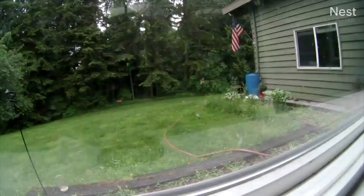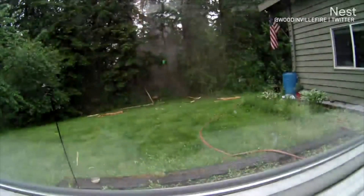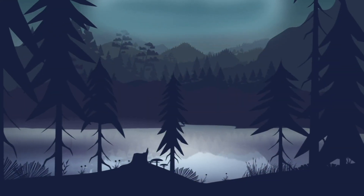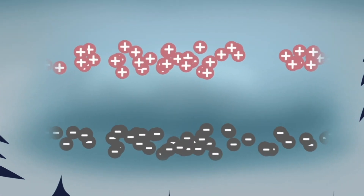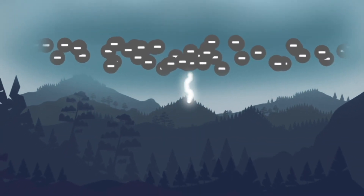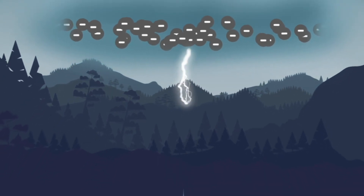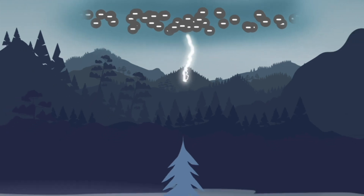Things can get dangerous when lightning strikes the ground. How does that happen? It gets very complicated. First, charges separate in the clouds. Then a channel of negative charge comes out of the bottom of the cloud towards the ground — a stepped leader. These often split, creating a tree-like pattern.